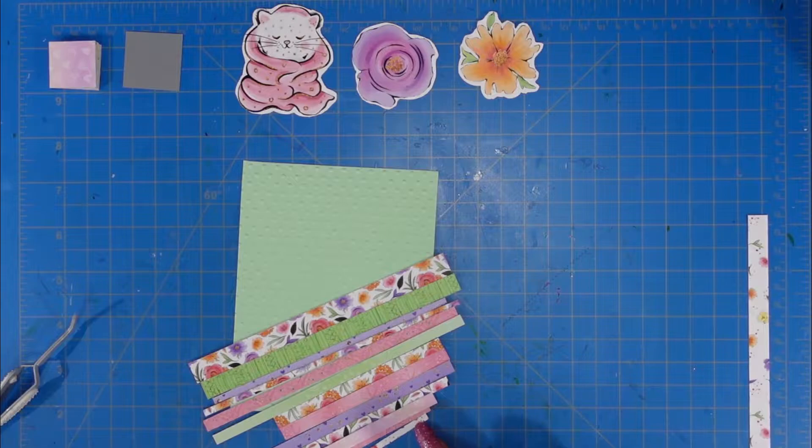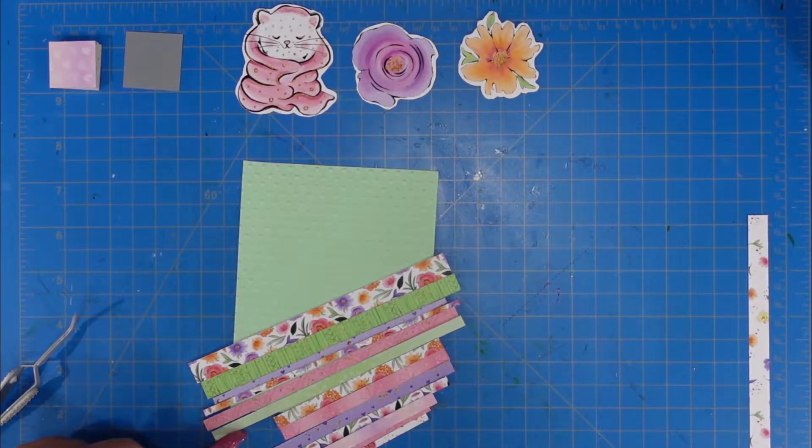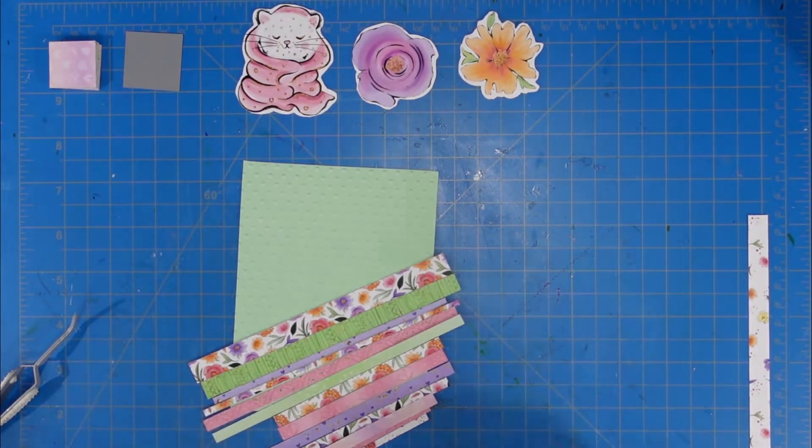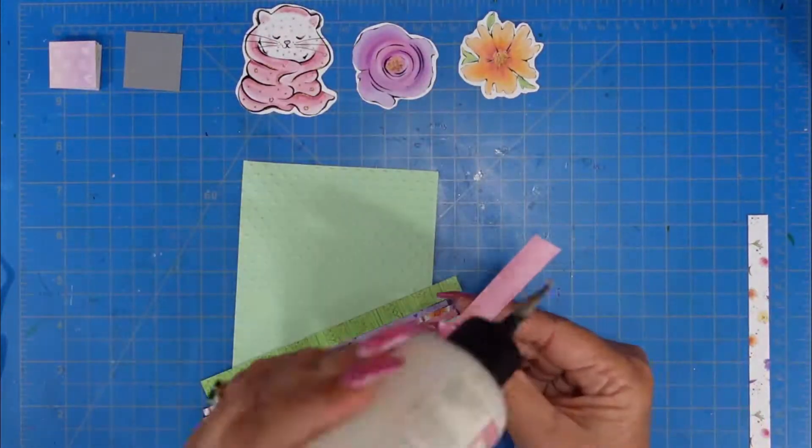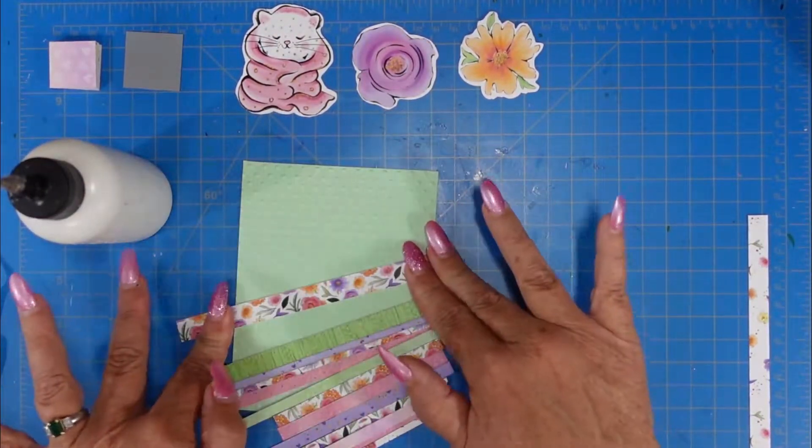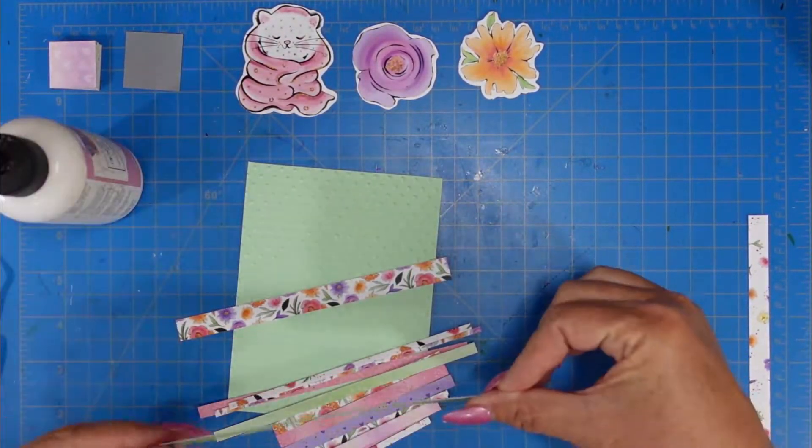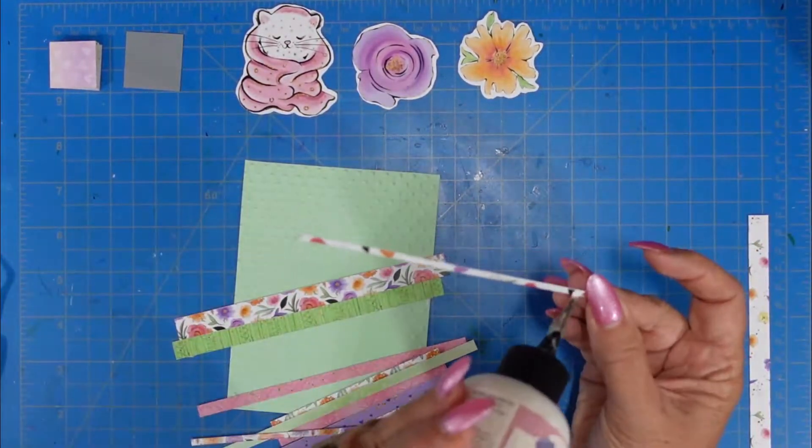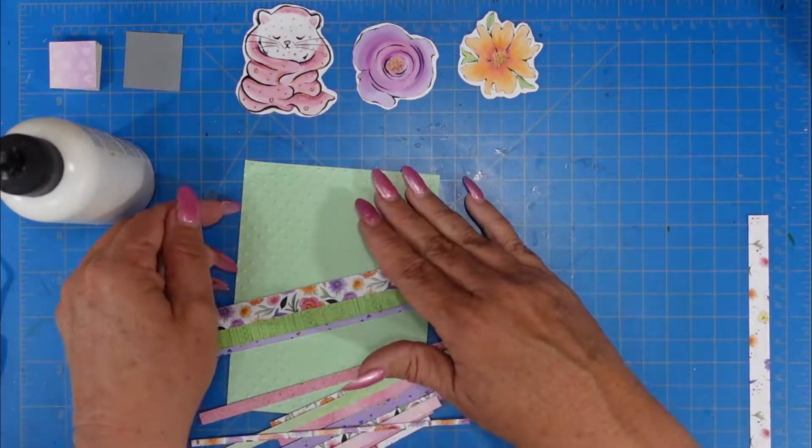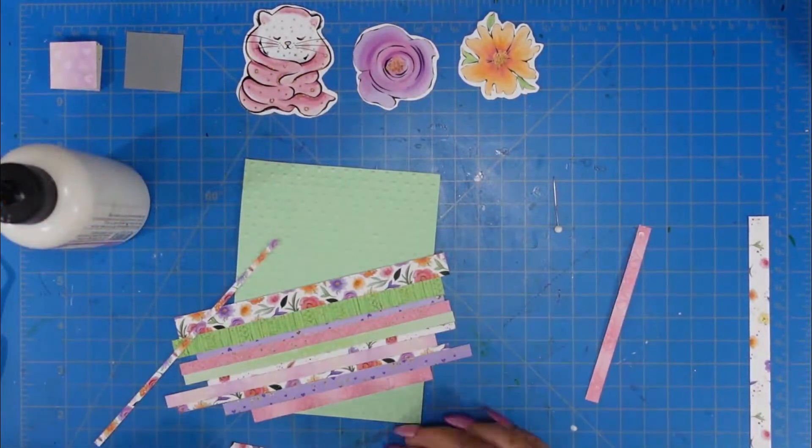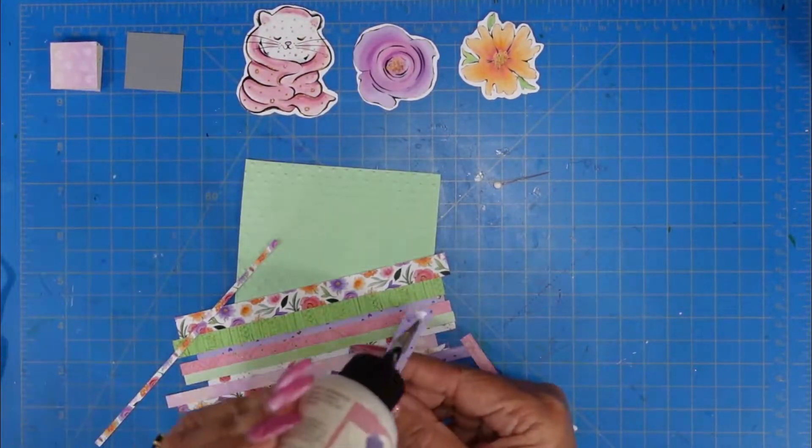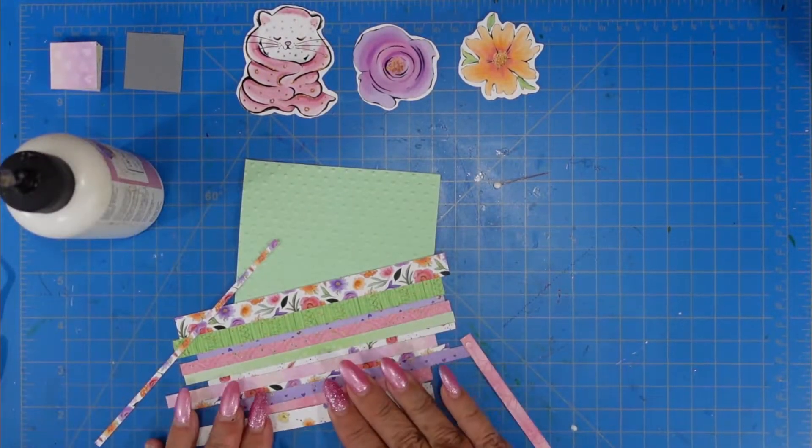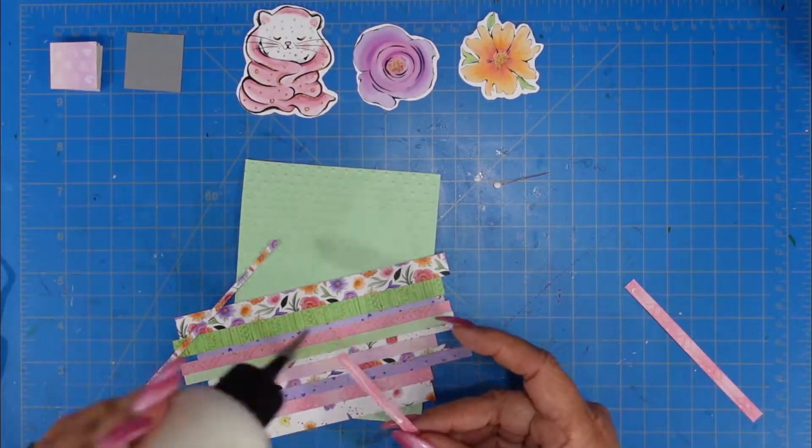So I wanted to use the scraps that I had left over from the hop cards that I had created, and if I didn't mention it, I did cut these to a quarter inch, half inch, and eighth inch increments. I did vary the colors, making sure that I broke up the purples and the florals.